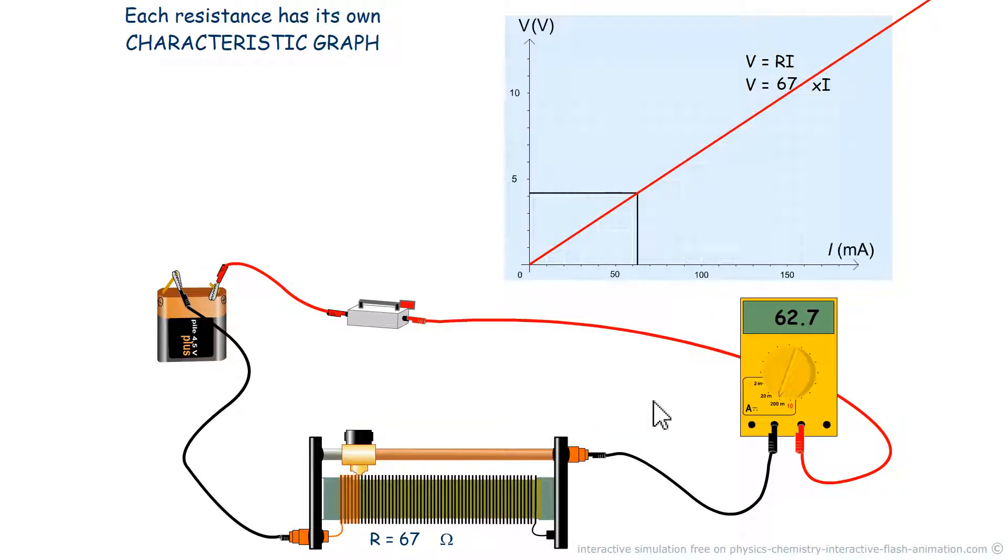Each resistance has its own characteristic curve, which, as its name suggests, characterizes it. That is to say that it is a bit like its identity card. So if we have a resistance of 67 ohms, as shown here at the bottom, we have a curve here that tells us that at a certain voltage, the resistance will react to let a certain intensity pass.